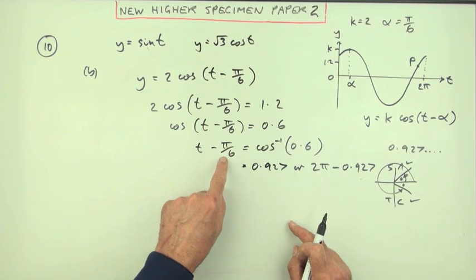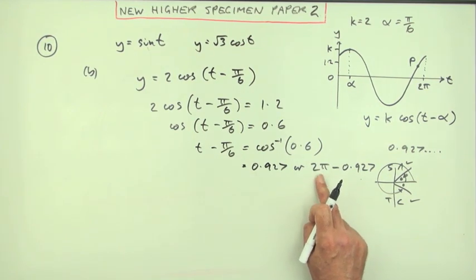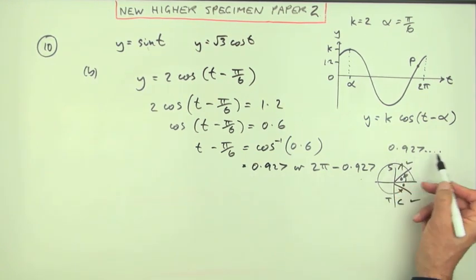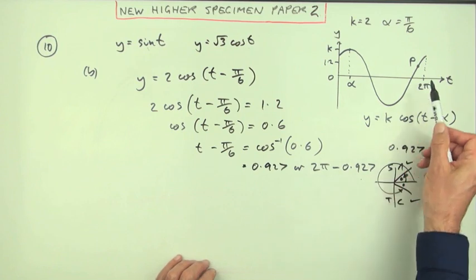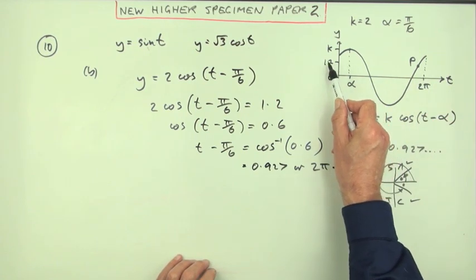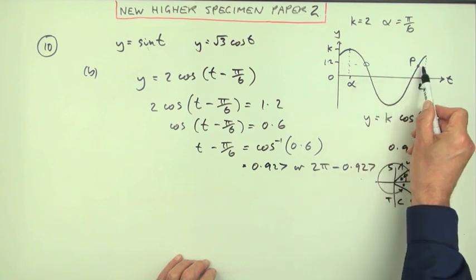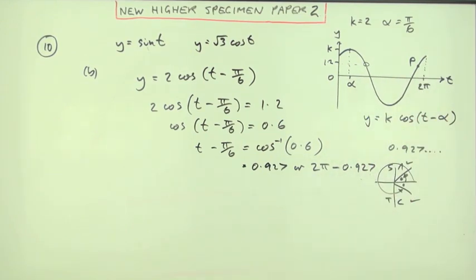Now this may well be an exact value, but your answer can't be an exact value because this thing certainly isn't. This was this big decimal thing that went on forever, so your answer will have to be decimals. The other thing you know is you're looking for this point. There are two points with a height of 1.2. There was one here as well, but I don't want that one. I want the second one. So this is the one that will produce the answer.